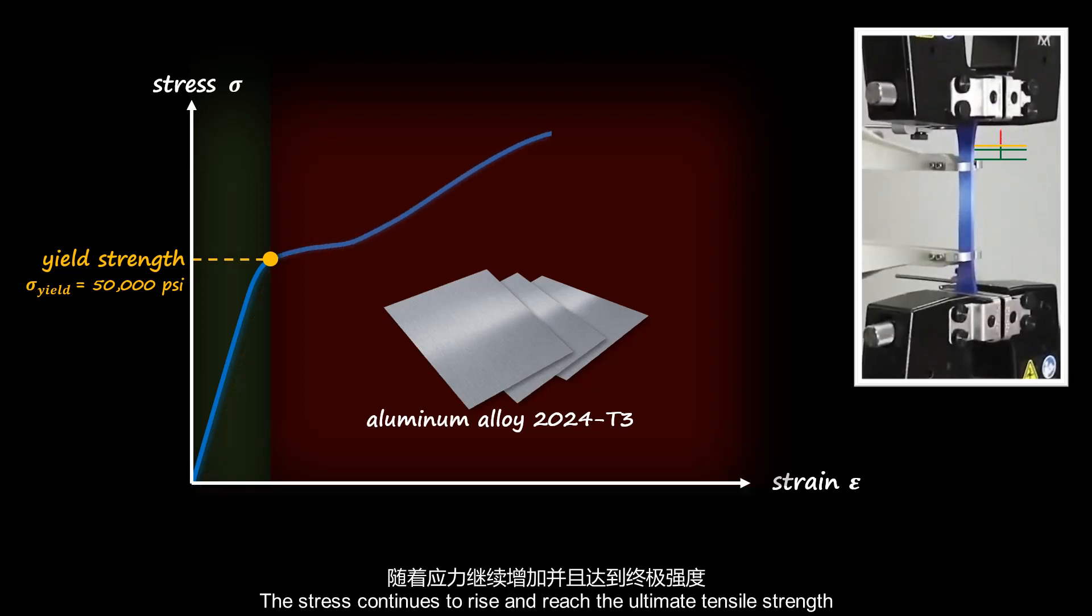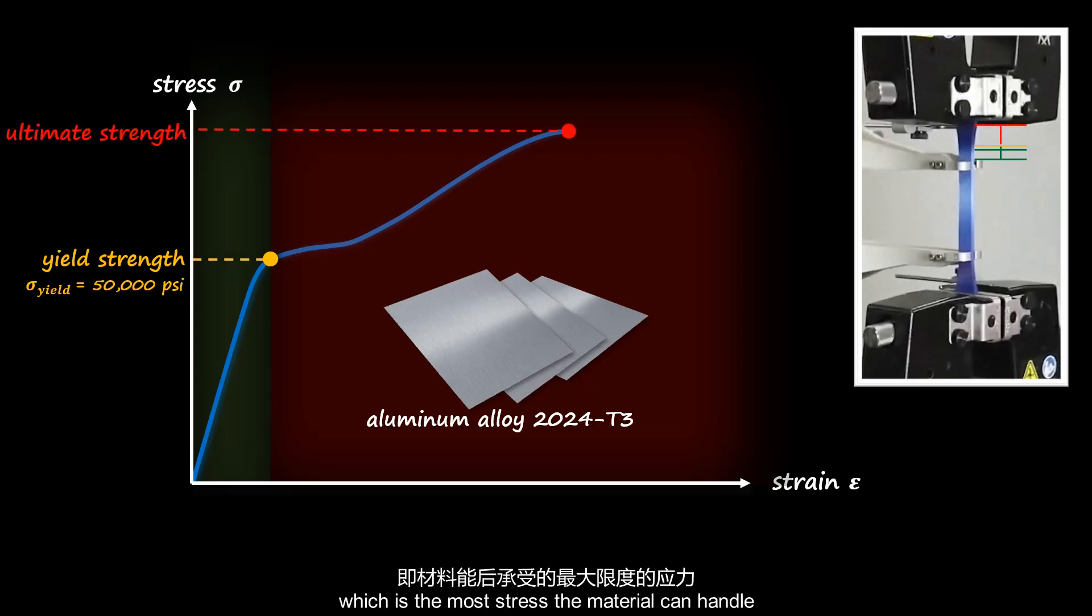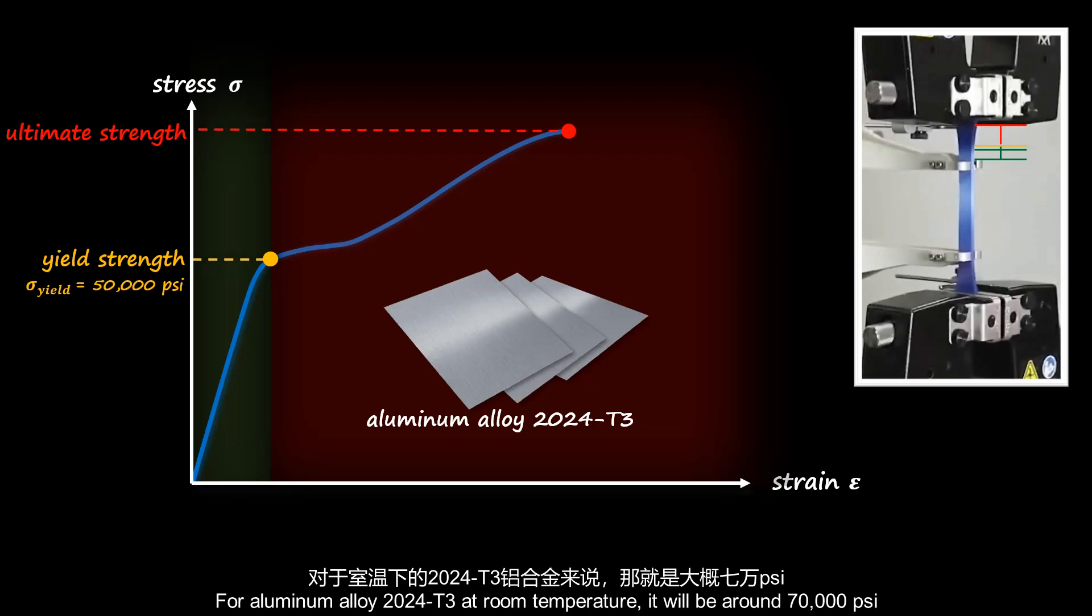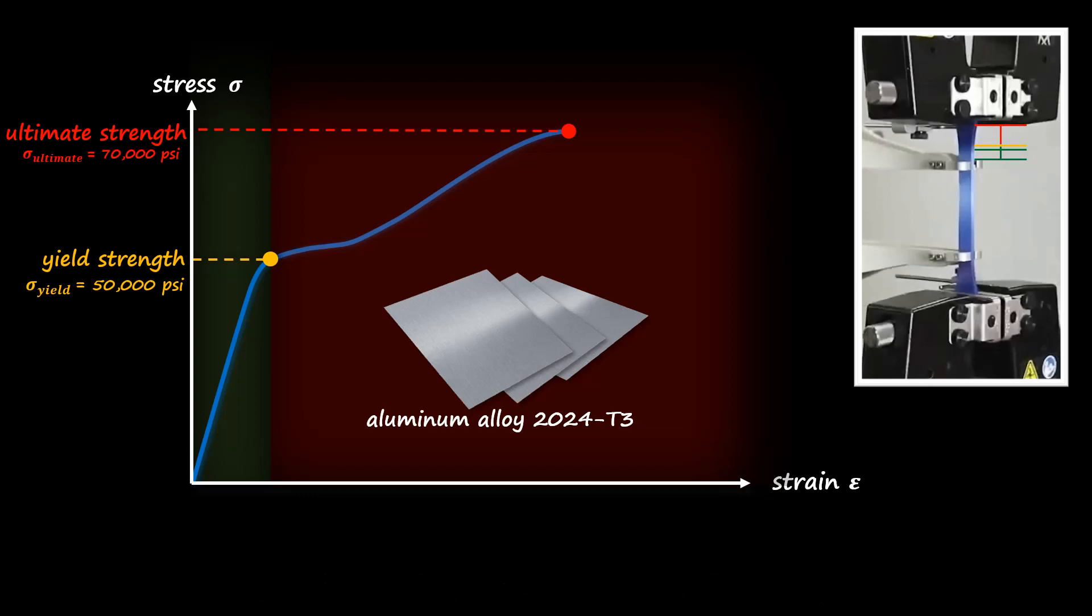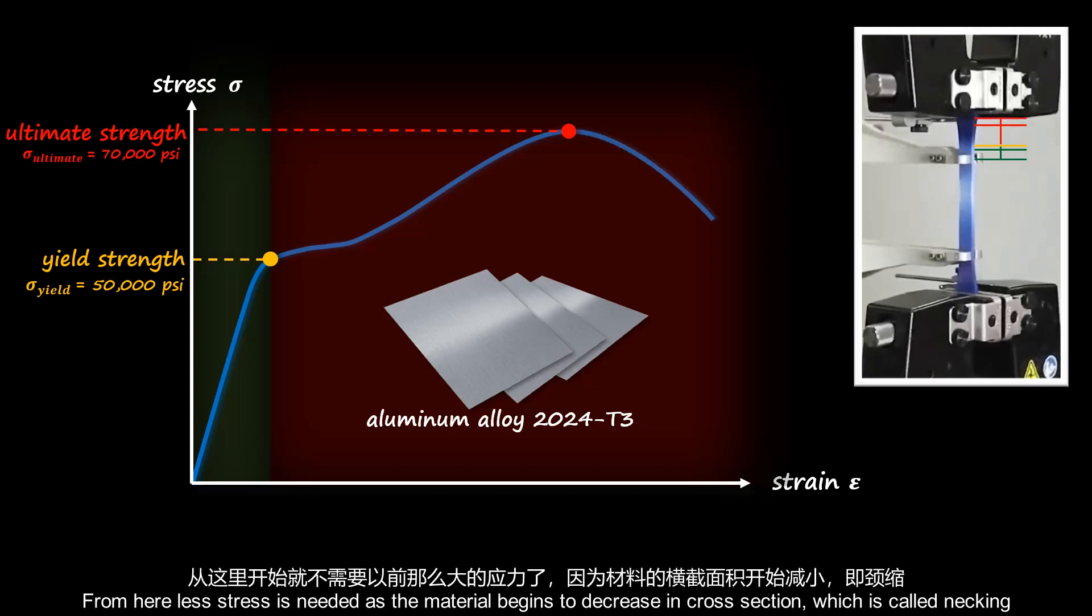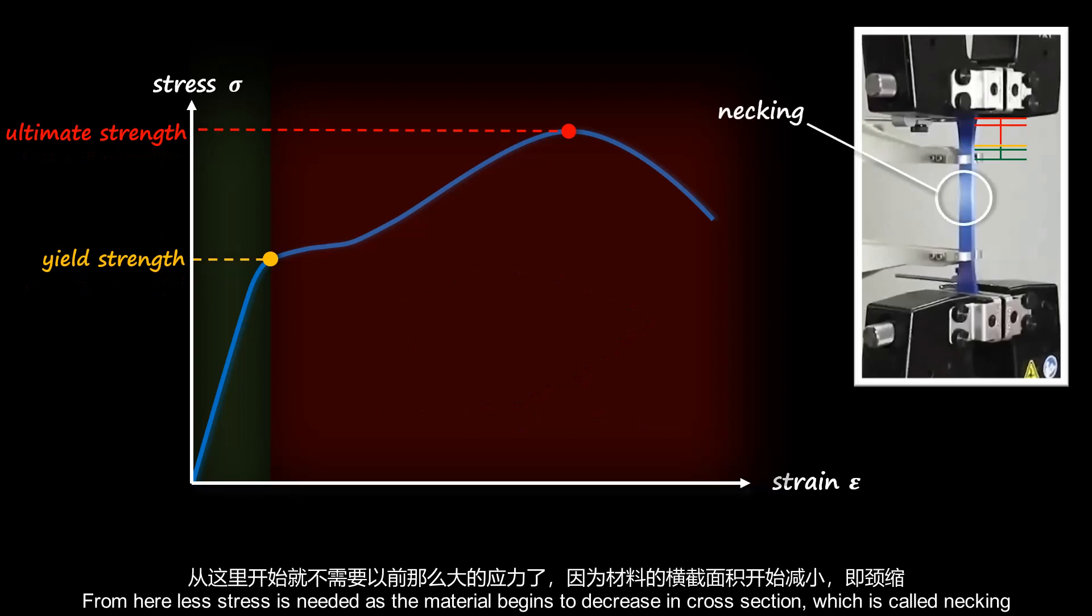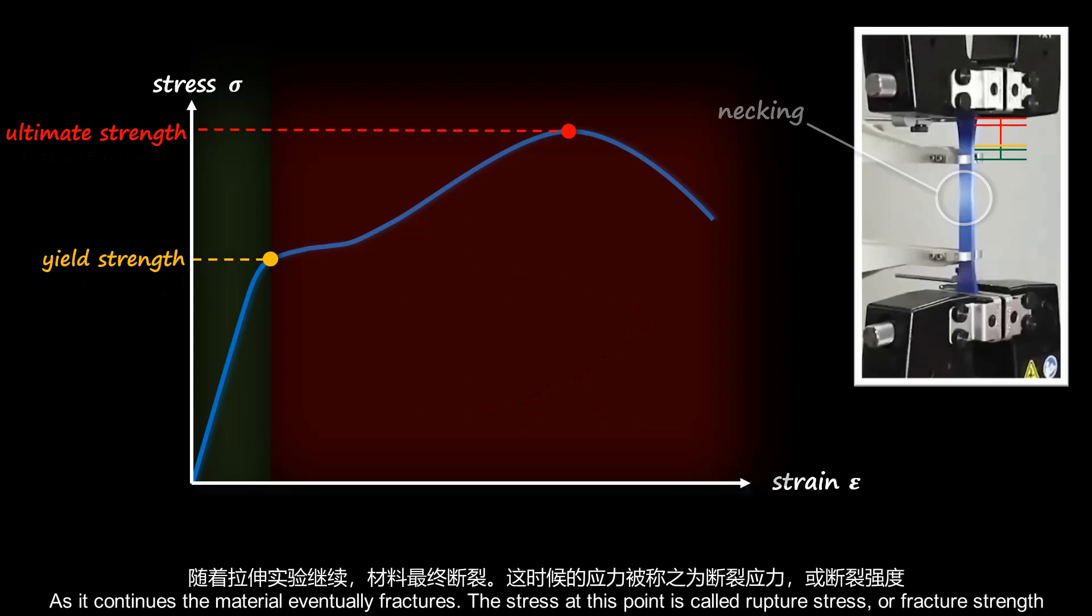The stress continues to rise and reaches the ultimate tensile strength, which is the most stress the material can handle. For aluminum alloy 2024-T3 at room temperature, it will be around 70,000 psi. From here, less stress is needed as the material begins to decrease in cross-section, which is called necking. As it continues, the material eventually fractures. The stress at this point is called rupture stress, or fracture strength.